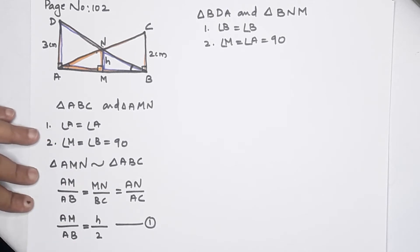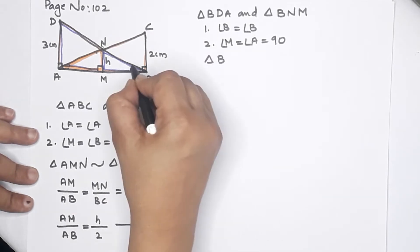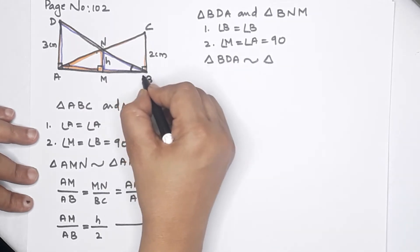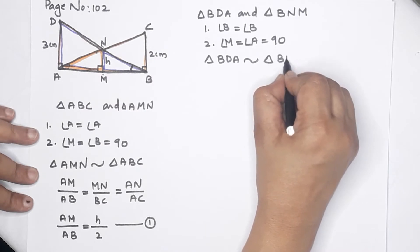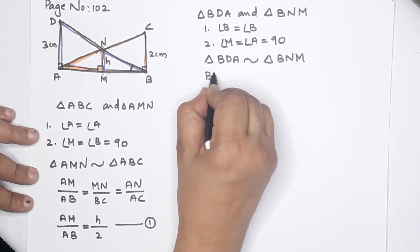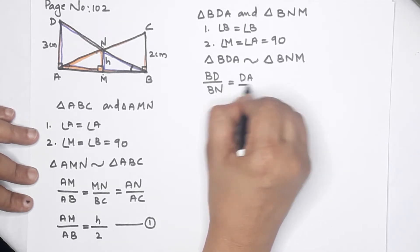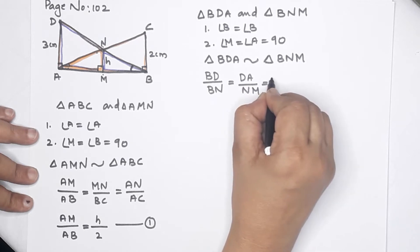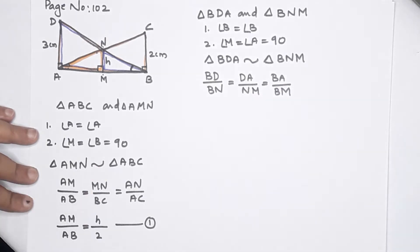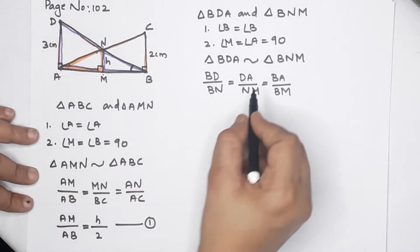By the angle sum property of a triangle, triangle B, D, A is similar to triangle B, N, M. Since two triangles are similar, sides are proportional: BD by BN equals DA by NM, which equals BA by BM.